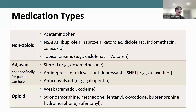Types of medications used to treat pain include non-opioids, adjuvants, and opioids. Non-opioids include acetaminophen, NSAIDs, and topical creams. Adjuvants include steroids, antidepressants — tricyclics, SNRIs — and anticonvulsants, which may not be specifically for pain but can help manage it. Weak opioids include tramadol and codeine; strong opioids include morphine, methadone, fentanyl, oxycodone, buprenorphine, and hydromorphone. Sufentanil is not seen in the community — it's administered in hospital or on the palliative care unit.